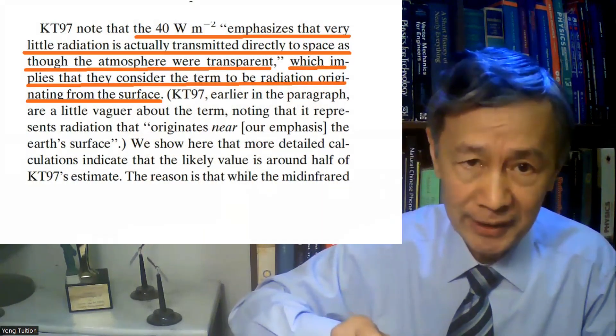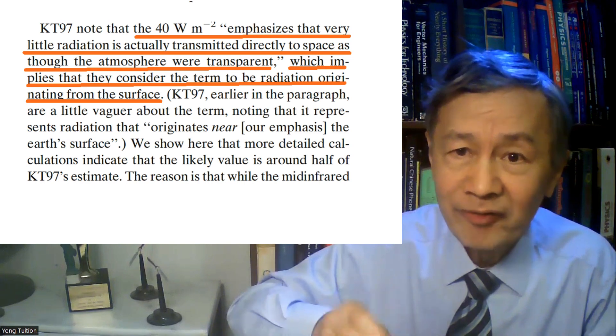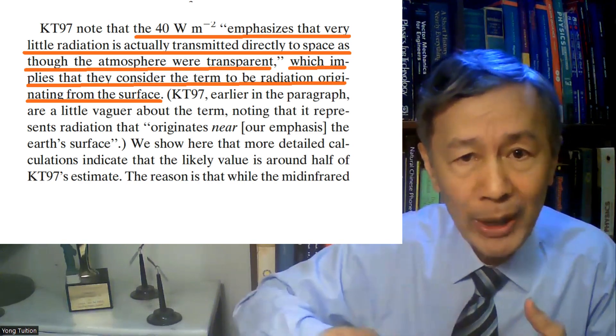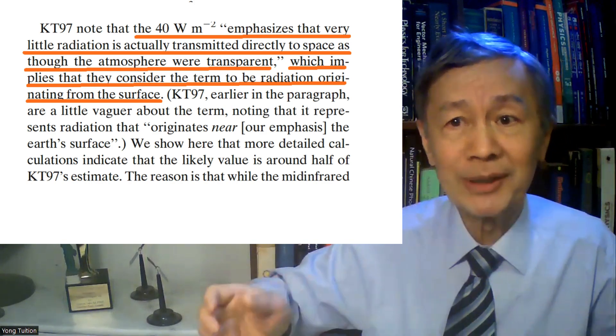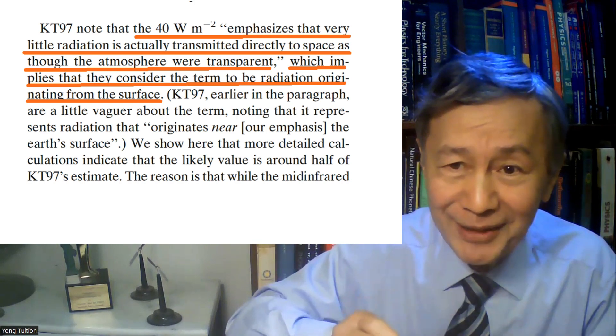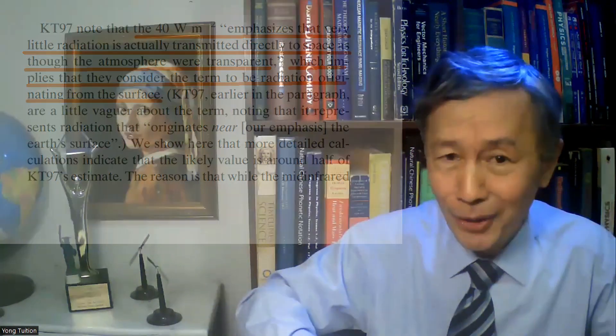Perhaps they also found the temperature jump or temperature discontinuity at the surface to be absurd. But at least they had the goal to admit the incurable defect in the standard model for the climate, unlike many other climate researchers. Still, Kiel and Trembath seemed cautious about their wording. They wrote that the 40 W/m² emphasizes that very little radiation is actually transmitted directly to space as though the atmosphere were transparent, which implies they consider that radiation originating from the surface. So if you don't read their paper carefully, you might think the transmitted surface radiation is from the surface.